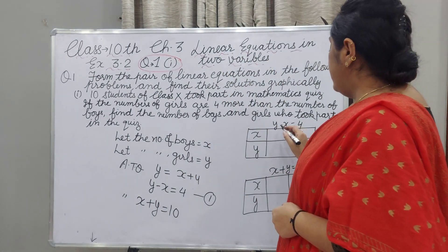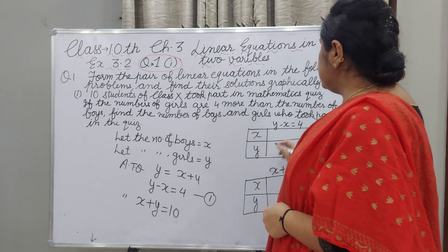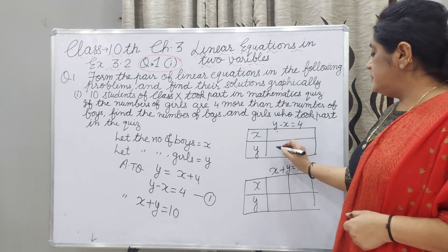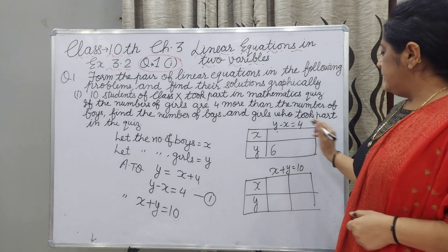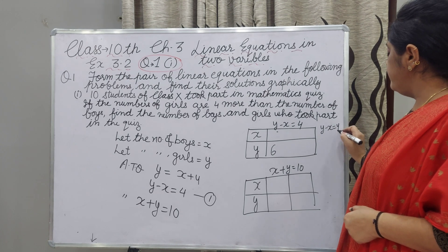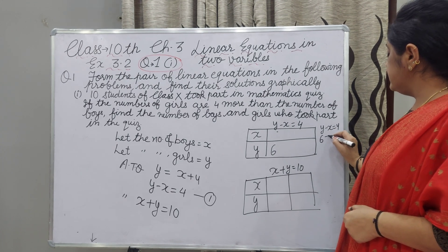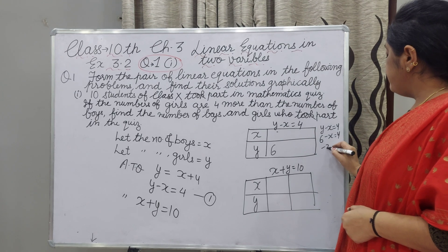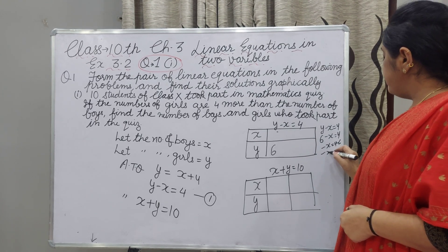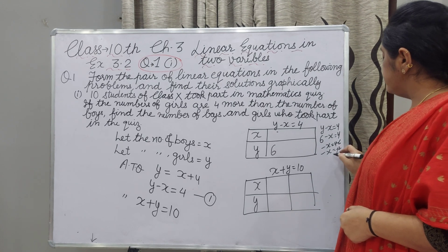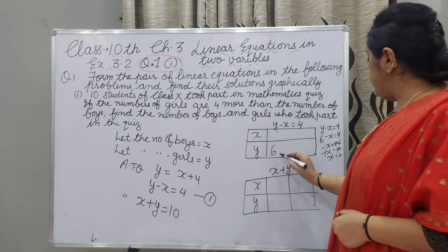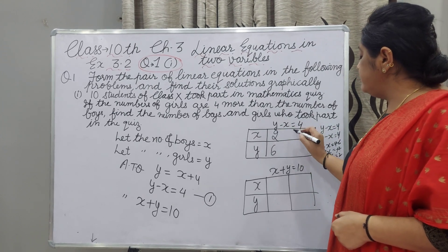If I take Y equals 6, then from Y minus X equals 4, we get 6 minus X equals 4. Minus X equals minus 2, so X equals 2. If Y is 6, X is 2.